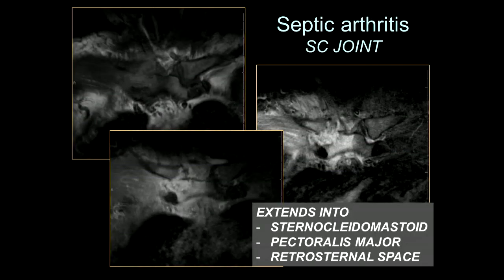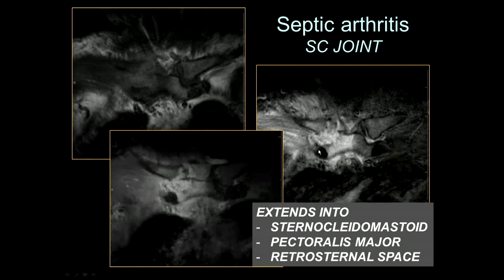The sternoclavicular joint and the acromioclavicular joint are two small joints as well. An infection of these joints bursts out of the capsule early on, extending superiorly up to the sternocleidomastoid and into the retrosternal space and pectoralis major musculature.